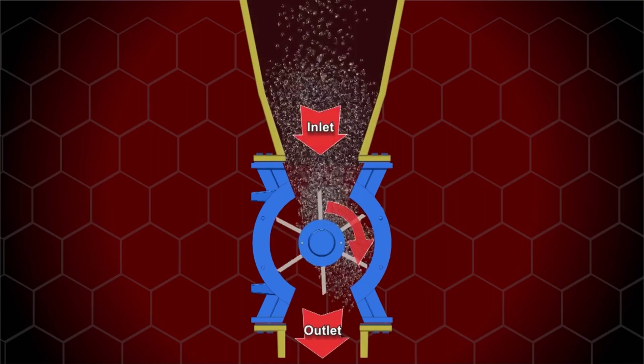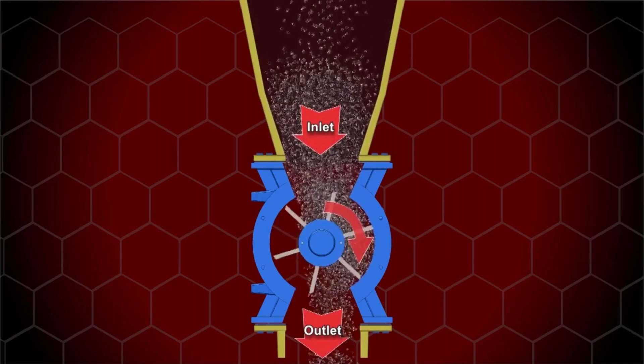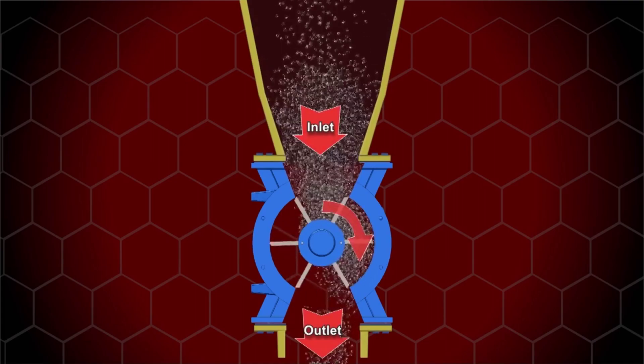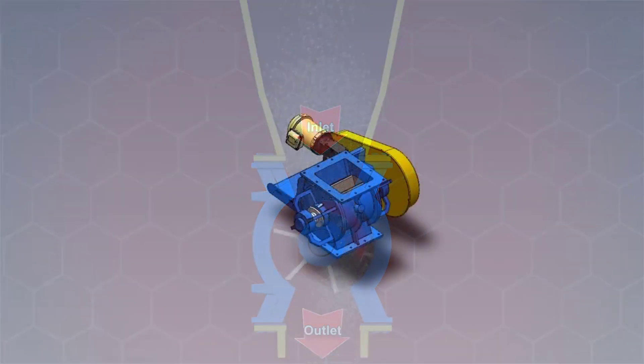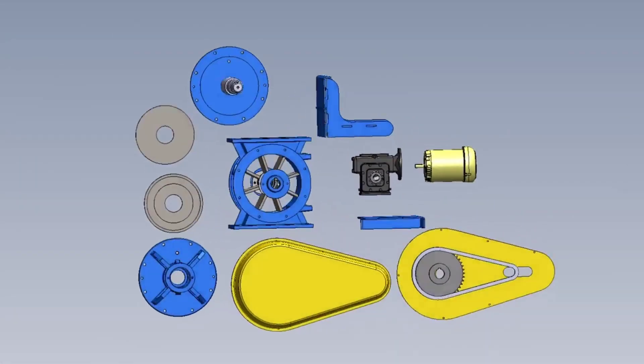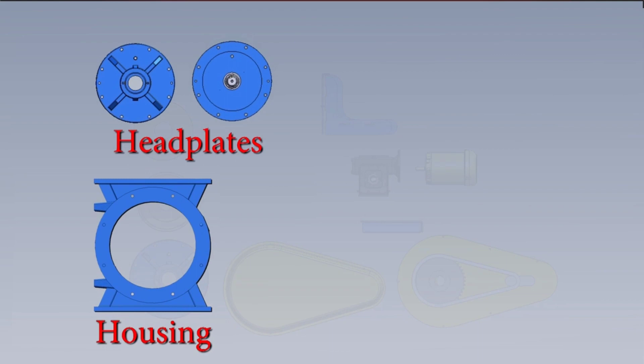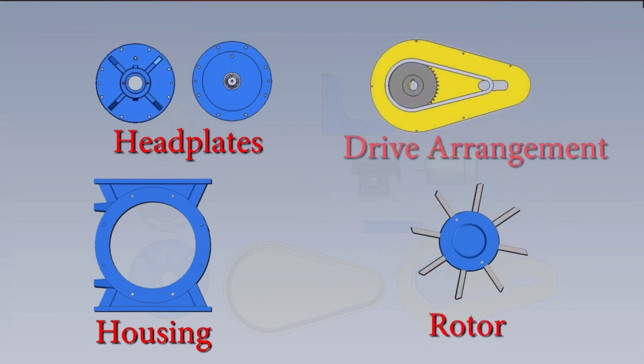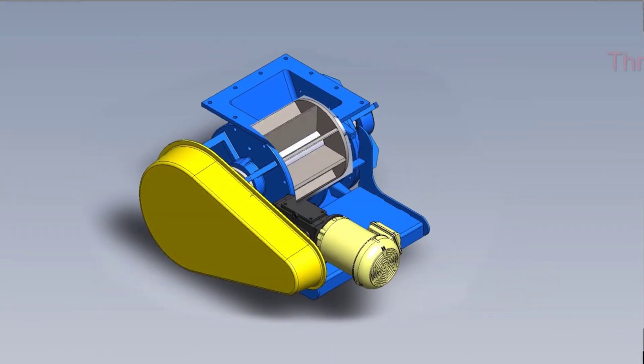Rotary valves are used where there's a need to minimize air loss while transferring material between vessels with differing pressures. The rotary valve has four main components: the housing, the head plates, the rotor, and the drive arrangement. There are three basic application types.